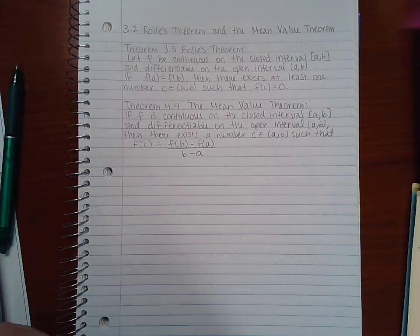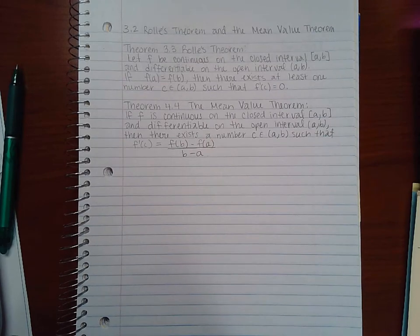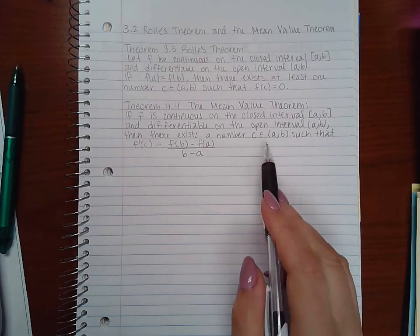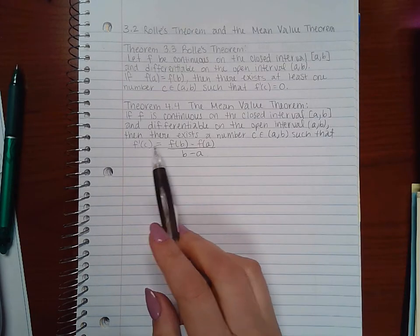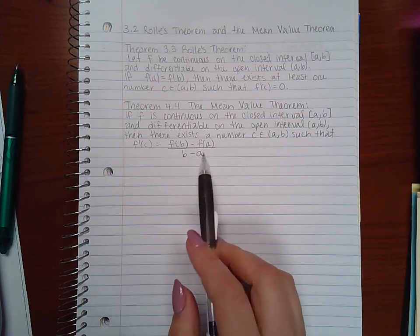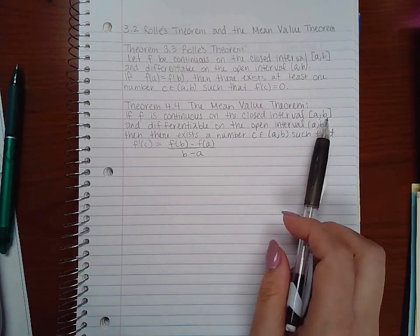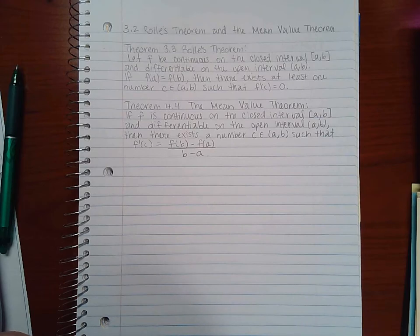Theorem 3.4 says the Mean Value Theorem. If F is continuous on a closed interval and differentiable on an open interval, then there exists a number C in the interval such that F prime of C is equivalent to the slope between those two values, those two points.